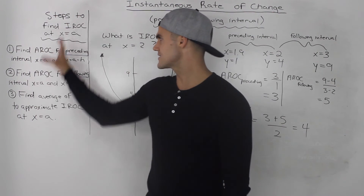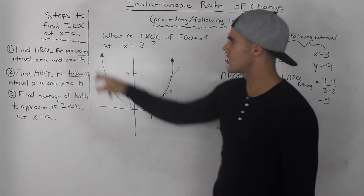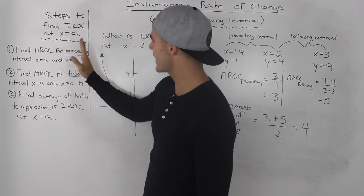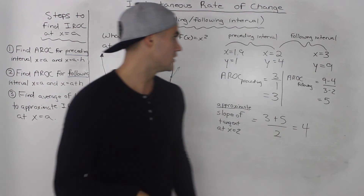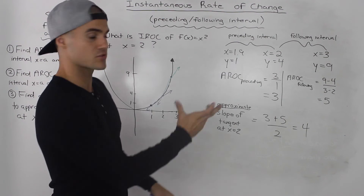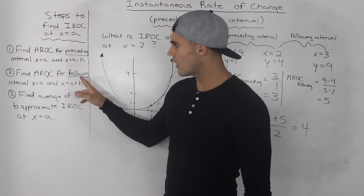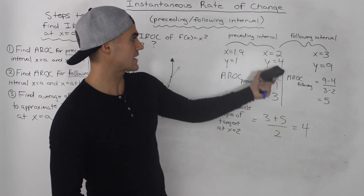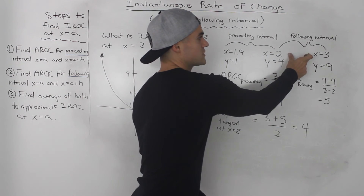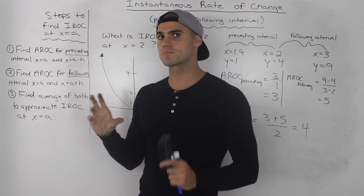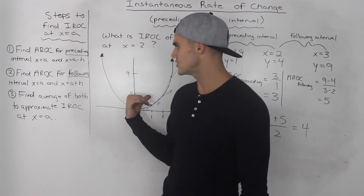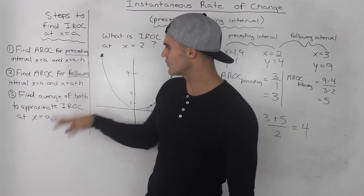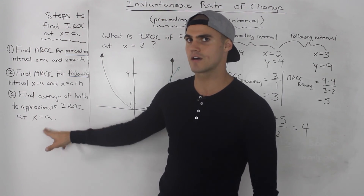To summarize the steps of the preceding and following interval method to find the instantaneous rate of change at x = a: Step 1 — find the average rate of change for the preceding interval from x = a - h to x = a, where h is some small value. Step 2 — find the average rate of change for the following interval from x = a to x = a + h. In this example h was 1, but I recommend using 0.1. Step 3 — average those two results to get an approximate instantaneous rate of change at x = a.